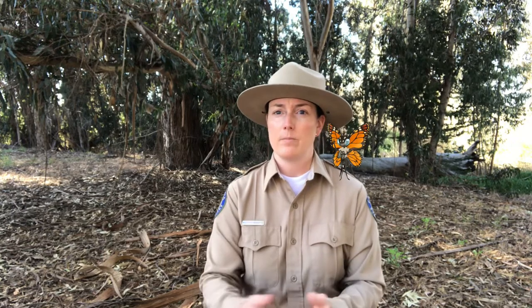Now that we know what a threat is, let's take a look at the threats we are going to talk about today. Listed are some of the threats to the western monarch butterfly, which include habitat loss, use of pesticides, and climate change. Molly and I will examine each of these threats and explore how they affect the western monarch butterfly population.